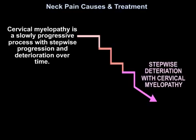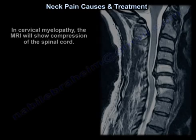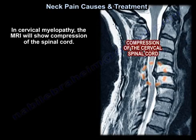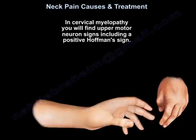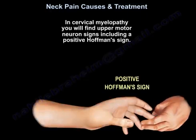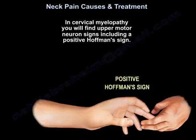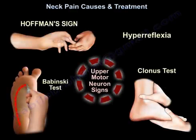Cervical myelopathy is a slowly progressive process with a stepwise progression and deterioration over time. In cervical myelopathy, you will find upper motor neuron signs, including a positive Hoffmann sign. Other upper motor neuron signs include hyperreflexia, a positive Babinski test, and a Clonus test.